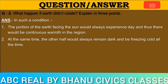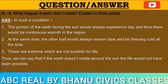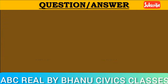Second, at the same time, the other half would always remain dark and be freezing cold all the time. Third, these extreme conditions are not suitable for life. Thus, we can say that if the earth doesn't rotate, life would not have been possible.